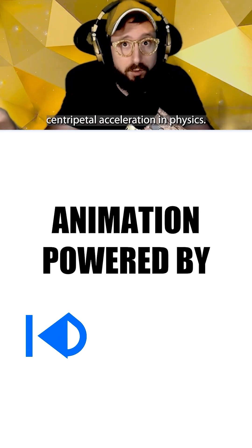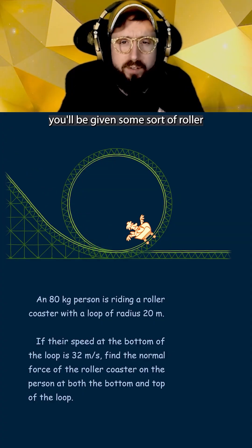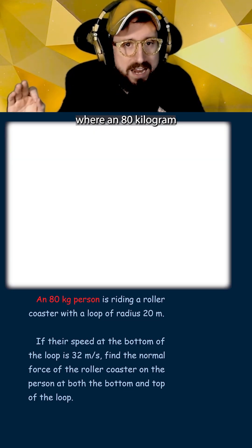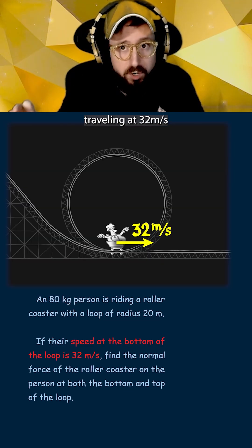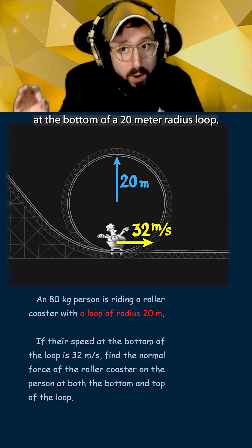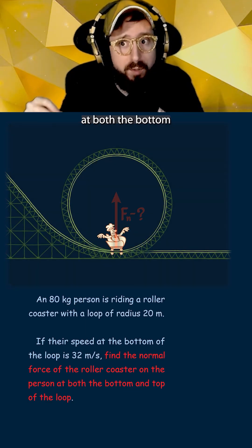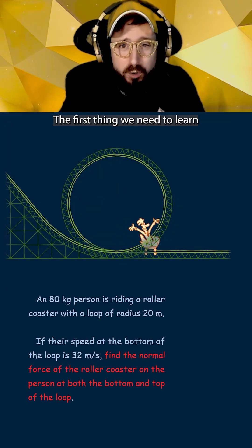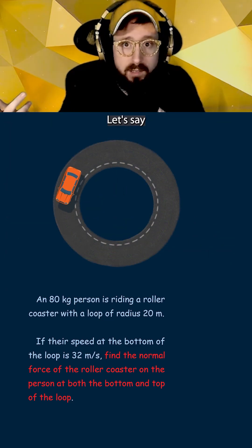Here's how to understand centripetal acceleration in physics. A lot of times you'll be given some sort of roller coaster problem such as this one, where an 80 kilogram person is on a roller coaster traveling at 32 meters per second at the bottom of a 20 meter radius loop, and we're asked to determine the normal force on the person at both the bottom and the top of the loop. The first thing we need to learn is how centripetal acceleration works.